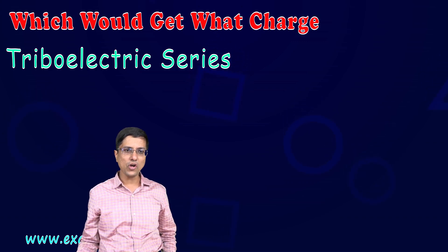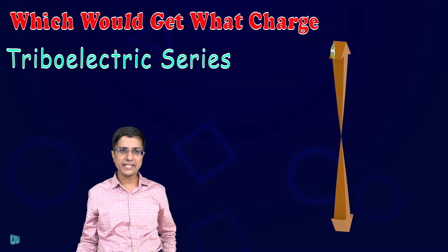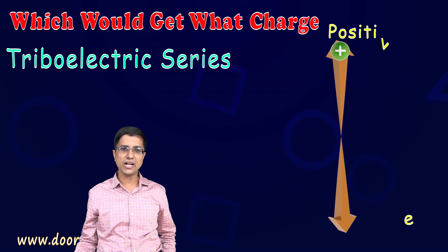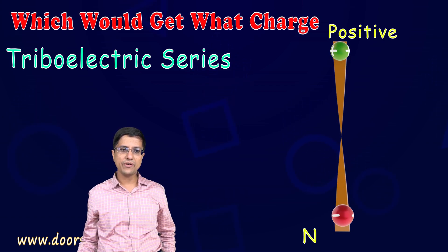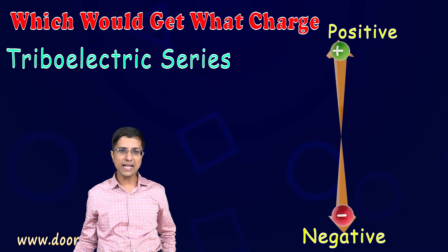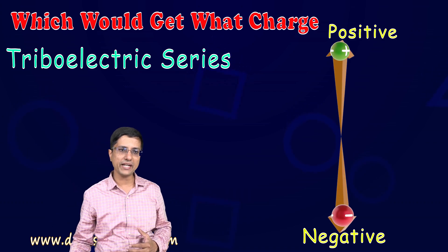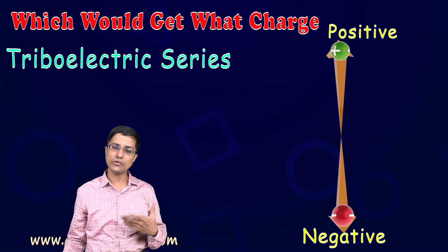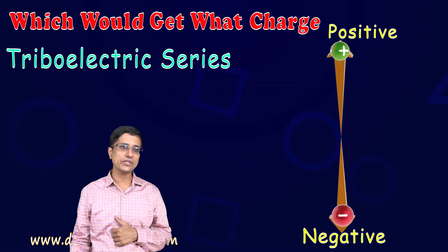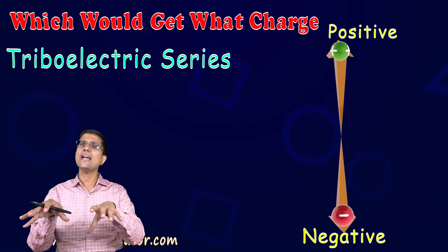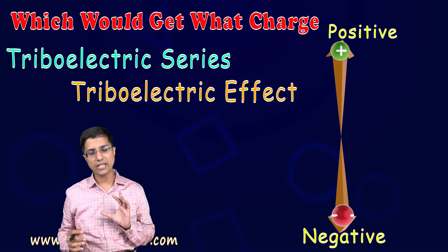In this series, at the top are the materials which have the greatest tendency to become positively charged, and at the bottom are those materials which have the greatest tendency to become highly negatively charged. So if you rub two materials together — the top material and the bottom material — the top one would become positive and the bottom one would become negative. This effect of creating separation of charges by rubbing is known as the triboelectric effect.